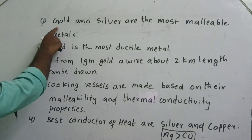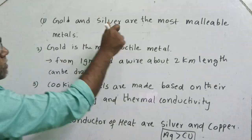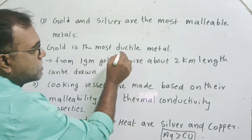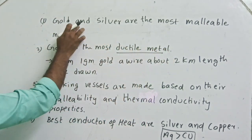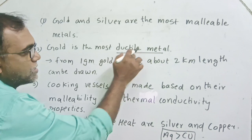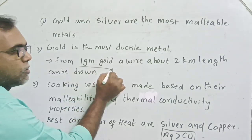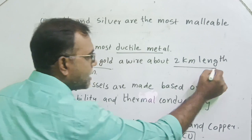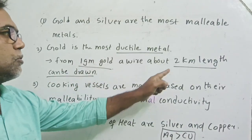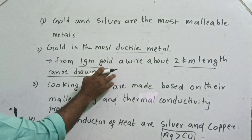First point: gold and silver are the most malleable metals. Gold is the most ductile metal. Gold is involved in both malleability as well as ductility property. Ductile property means drawn into wire. For example, from 1 gram of gold, a wire about 2 km in length can be drawn. This property is called ductile property.